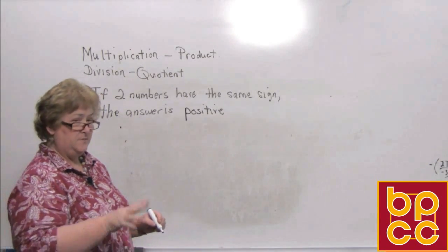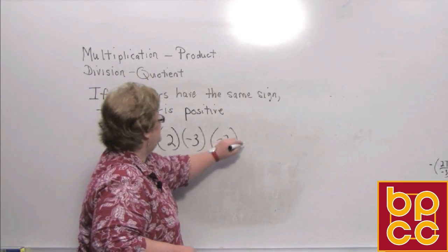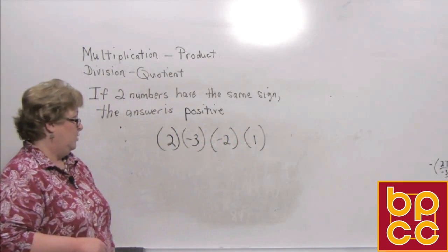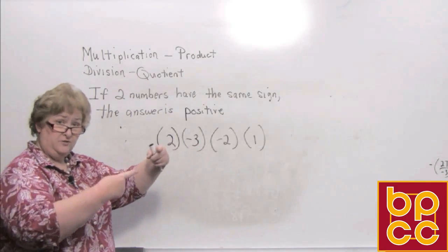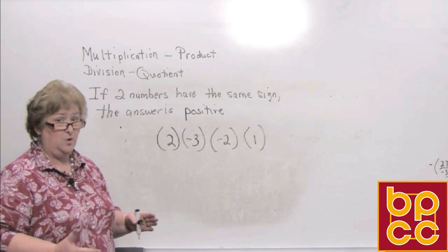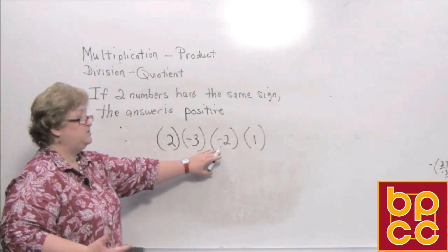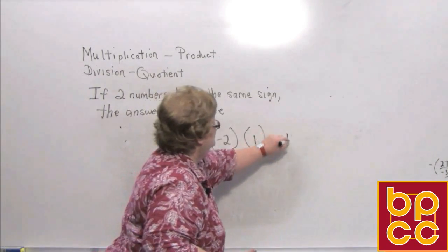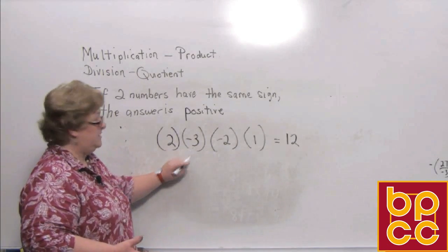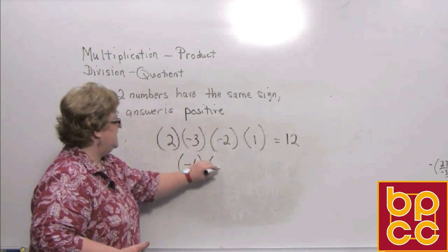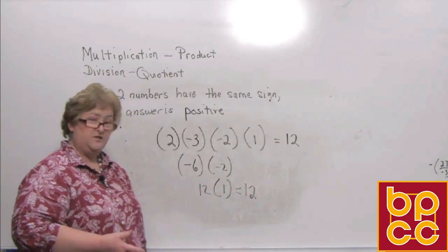Now let's multiply more than two numbers. Let's do 2 times a negative 3 times a negative 2 times 1. We can look and see if the negative numbers each have a partner — I have two negatives, and two negatives come together to make a positive, so this problem is going to have a positive answer. 2 times 3 is 6, 6 times 2 is 12, and 12 times 1 is 12. If you take two numbers at a time: 2 times negative 3 is negative 6, and negative 6 times negative 2 — two negatives make a positive — is 12. And 12 times positive 1 is still 12.